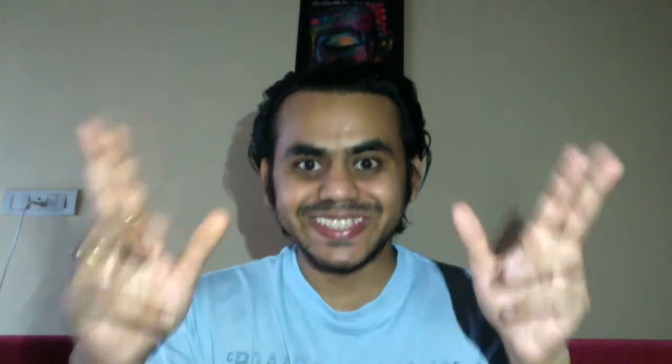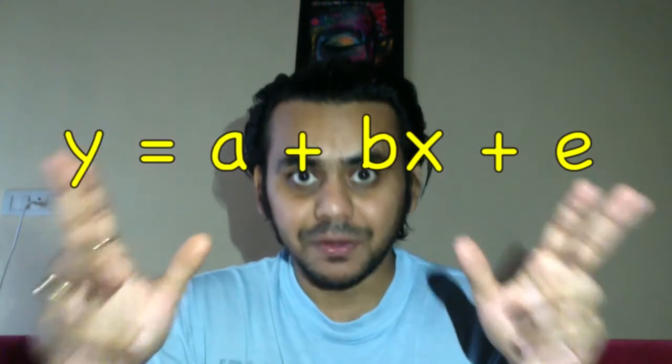What is econometrics? Econometrics is the application of statistics in economics, but these days it is also applied in other social sciences like history and political science. And this is the magical equation of econometrics: y is equal to a plus bx plus e.